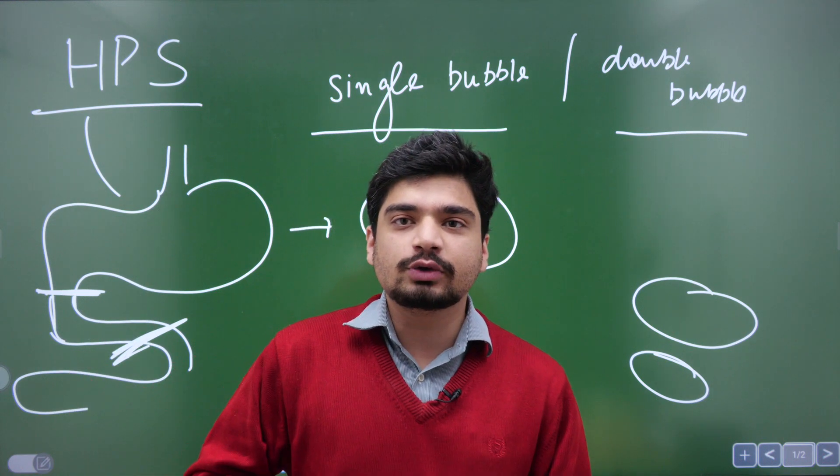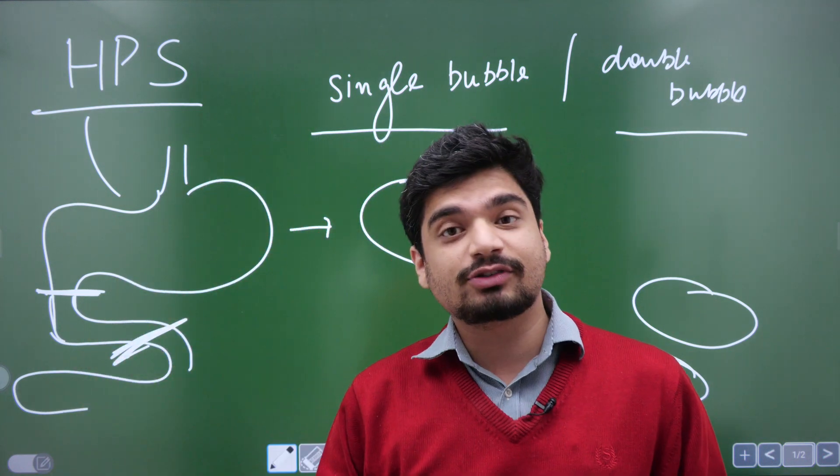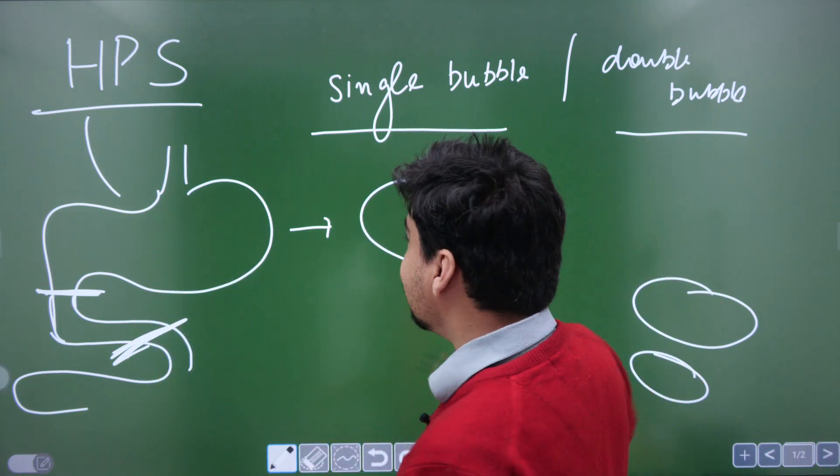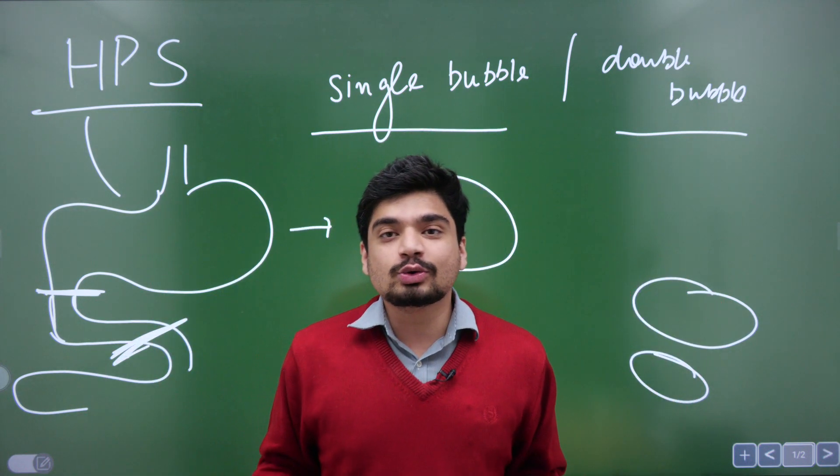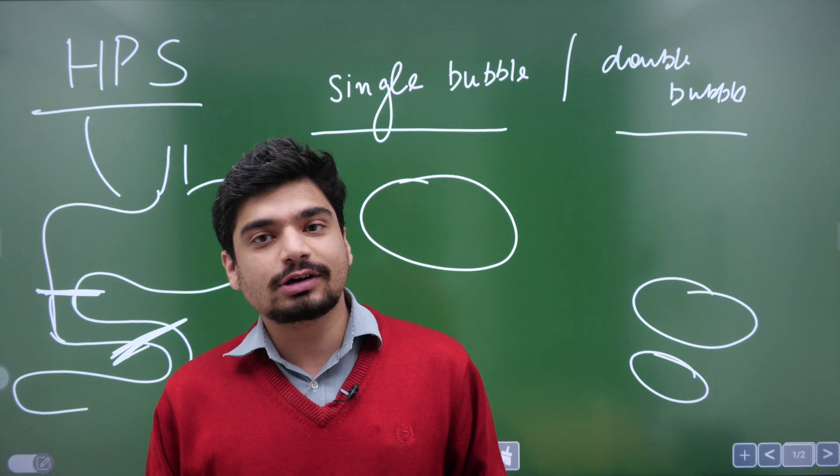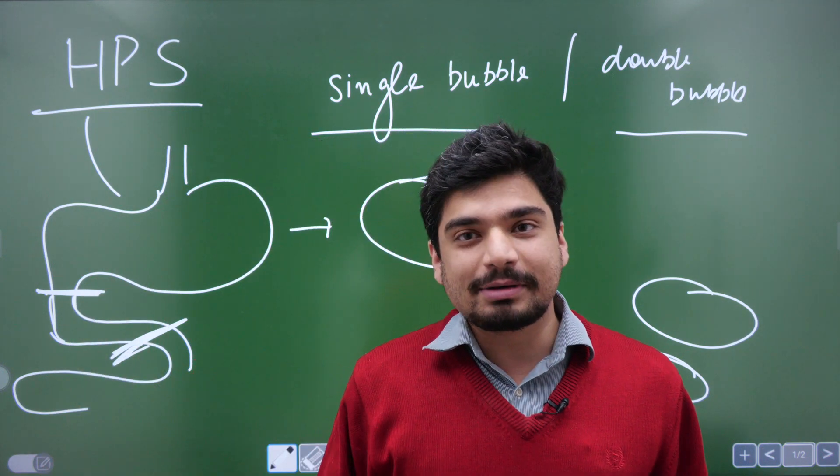Today we are going to learn about hypertrophic pyloric stenosis, HPS versus duodenal atresia, and two common signs that are associated with these two conditions: single bubble and double bubble signs.